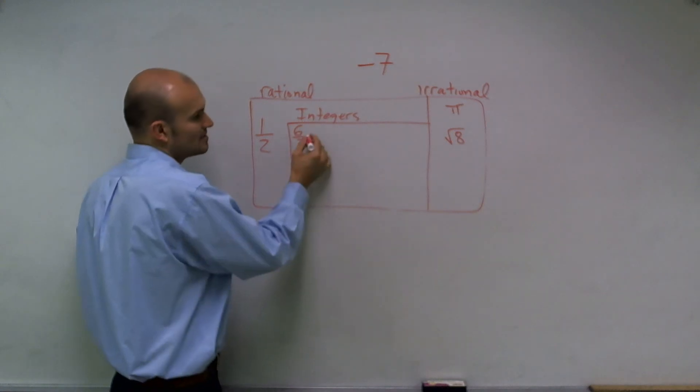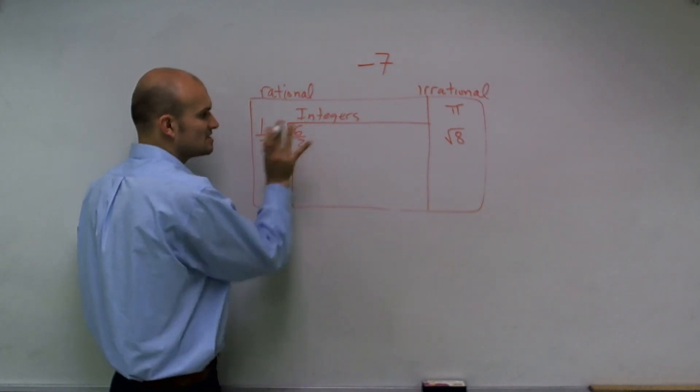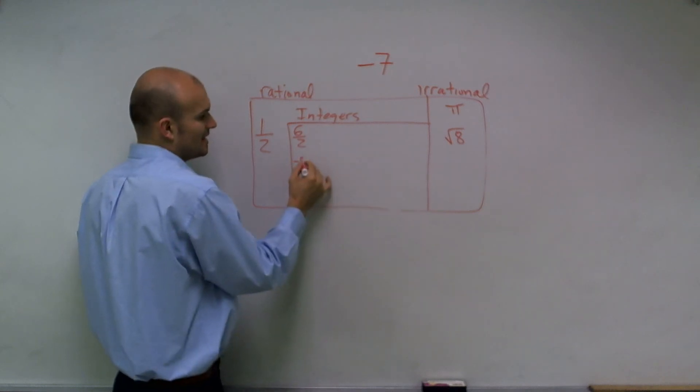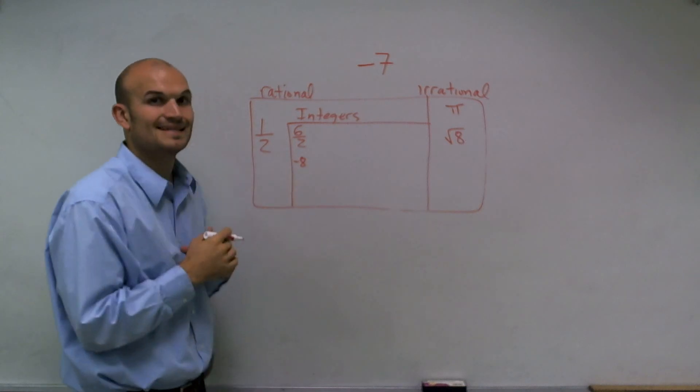So 0.5 isn't going to be one of those whole numbers that we're looking for. However, 6 divided by 2 does equal 3. But the special thing about integers, which is going to separate them from the rest of these, is that they can also be negative.